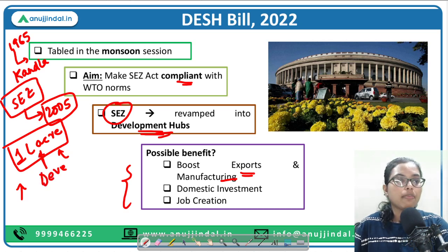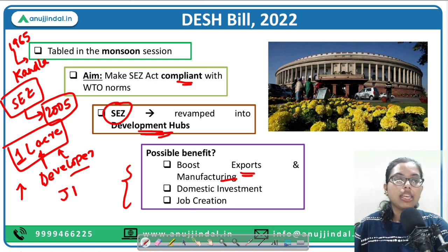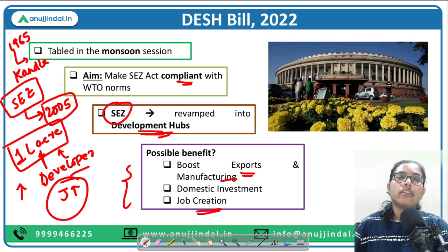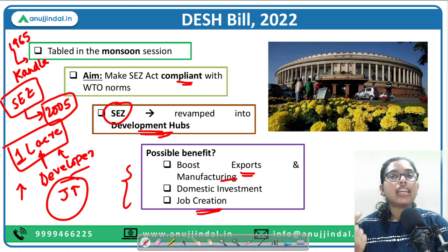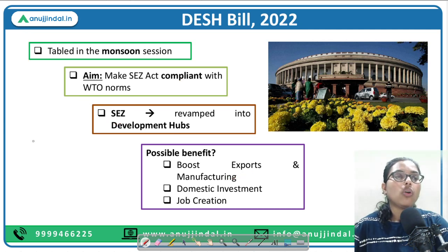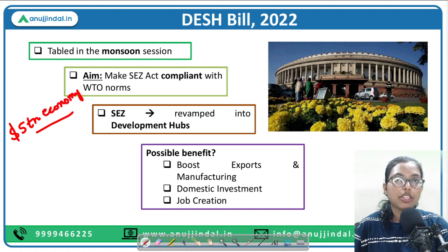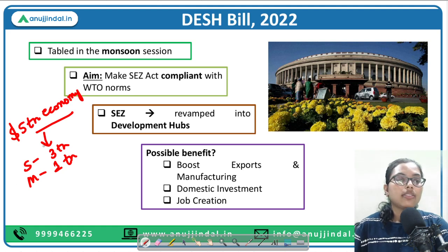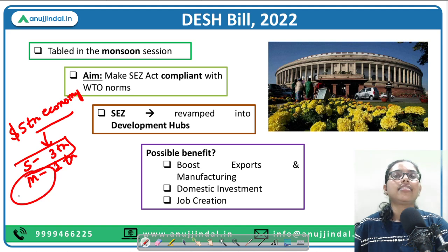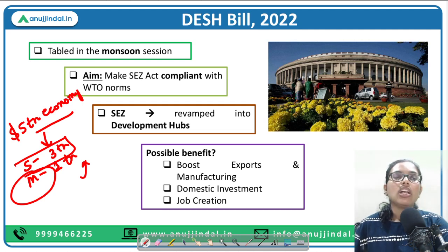By utilizing this land under the DESH Bill, developers will be incentivized, employment will be created, and jobs will be generated. This is the ultimate objective — more employment creation and catering to domestic as well as foreign investments. India has dreamed of becoming a 5 trillion dollar economy. In the budget it was stated that 1 trillion is needed from manufacturing and 3 trillion from services. While services have performed well, manufacturing has not met the mark — boosting it is a key goal of the DESH Bill.